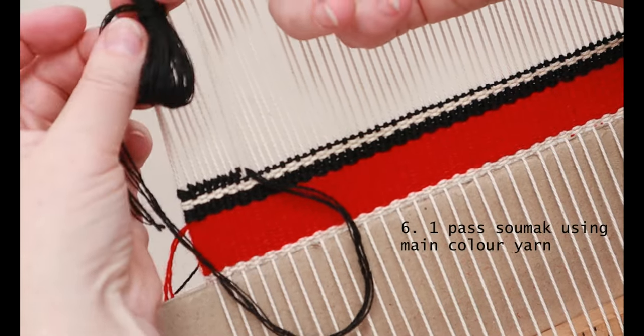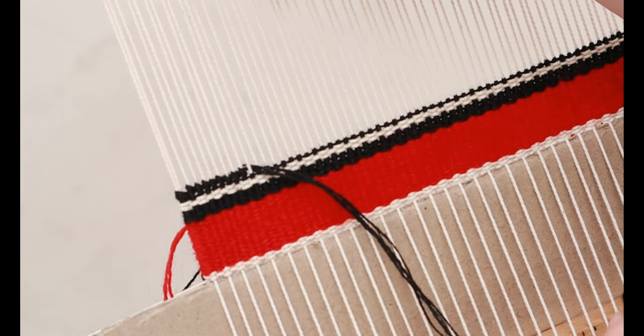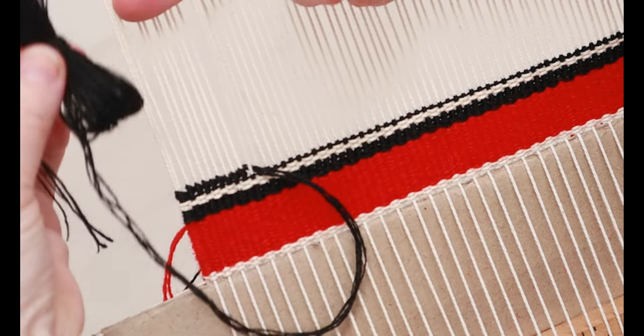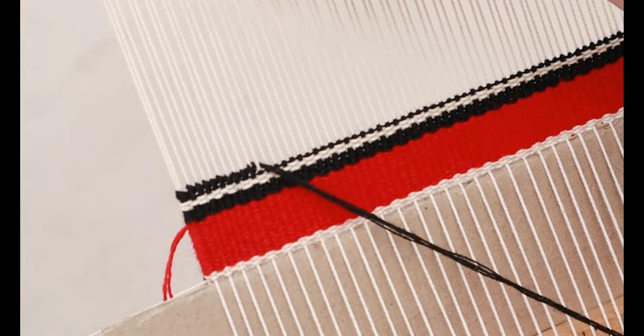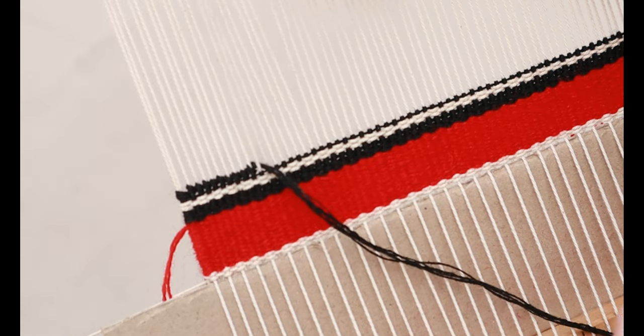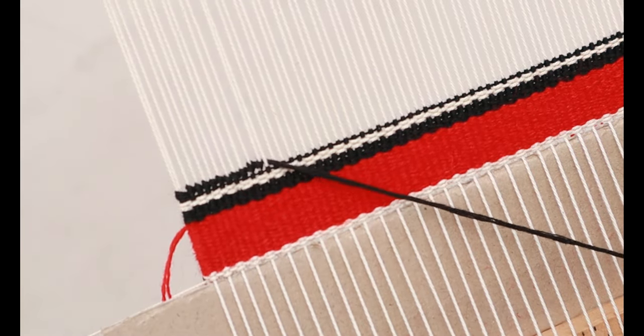Next we're going to do one row or one pass of soumak. Soumak is something most tapestry weavers would have already done, I would imagine. I'm going to go fairly slowly. It's basically looping around each warp and then going to the next one on the right and looping around.